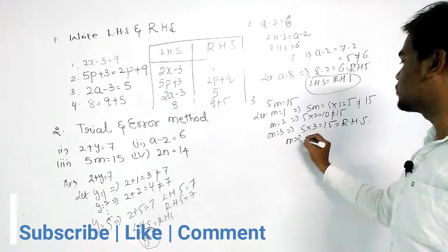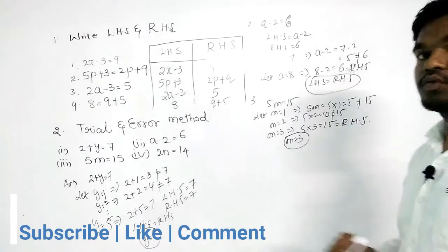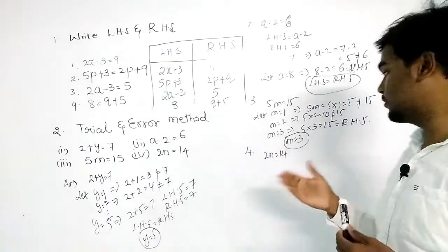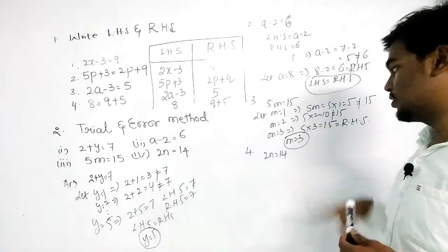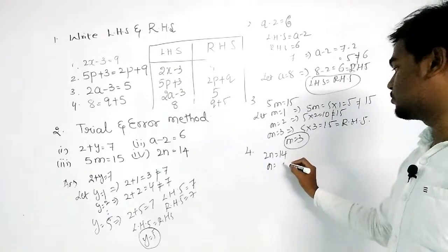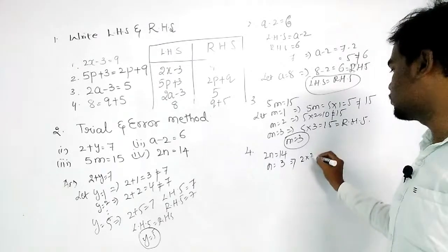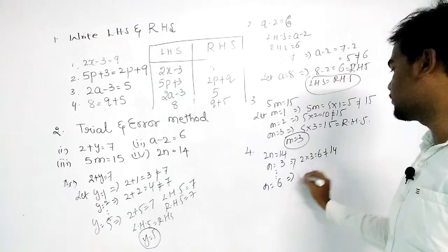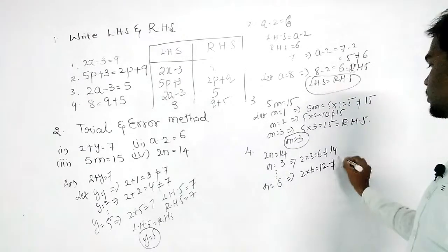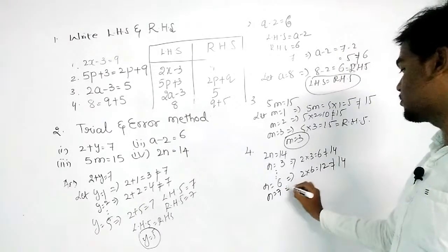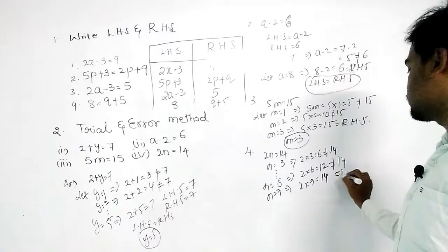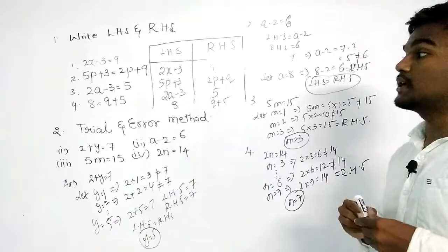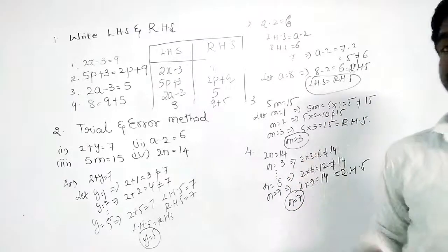The fourth question is 2n equal to 14. Let n equal to 3: 2 into 3 equals 6, not equal to 14. Let n equal to 6: 2 into 6 equals 12, not equal to 14. Let n equal to 7: 2 into 7 equals 14, which equals RHS. So n equals 7. If there are any questions or queries, please comment below — we will keep you updated.